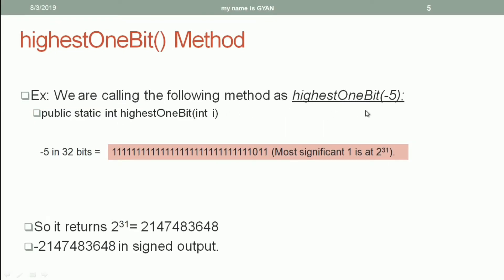Here we are calling the highestOneBit() method of the class integer using minus 5 as its argument. Minus 5 can be represented in 32 bits as a specific binary pattern. The most significant 1 in this binary pattern is at position 31, so its weight is 2 to the power 31. When represented as a signed value, 2 to the power 31 results in a negative number, and that's what highestOneBit() returns when we pass minus 5.